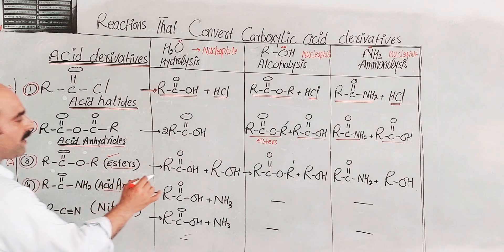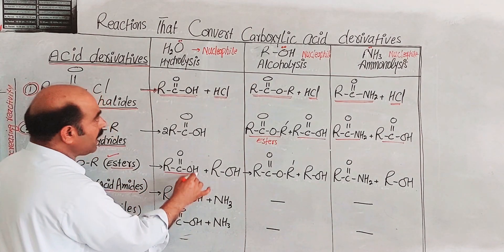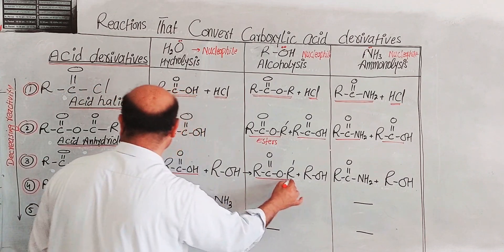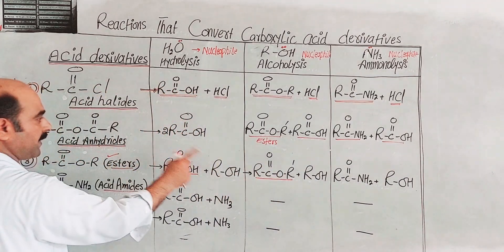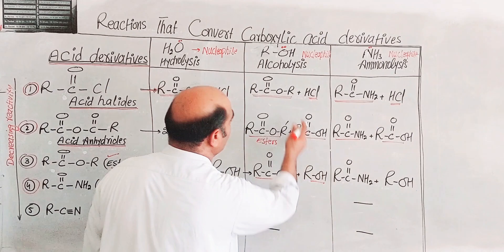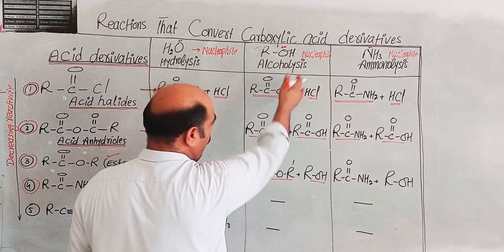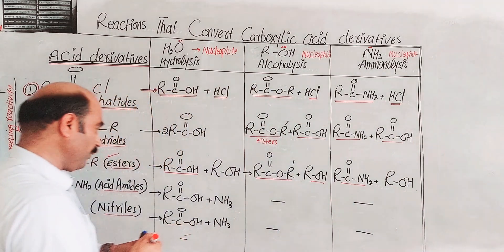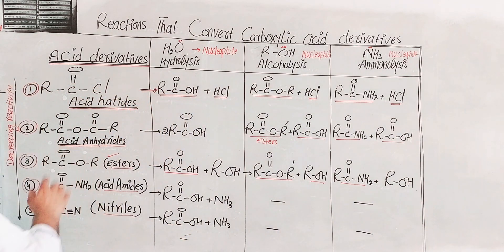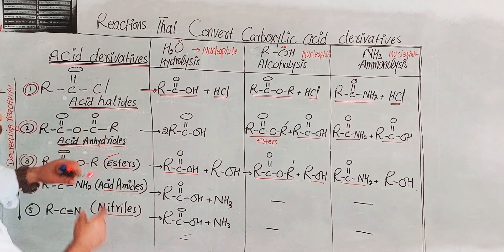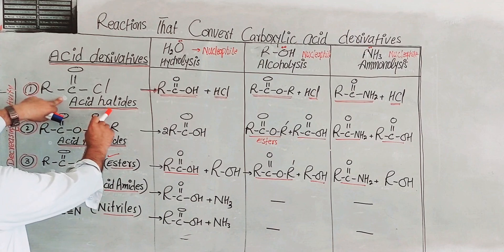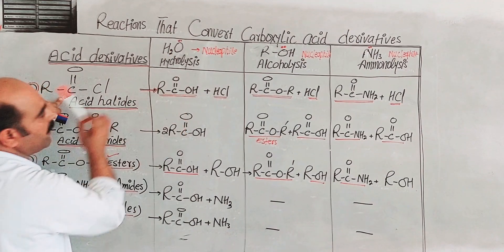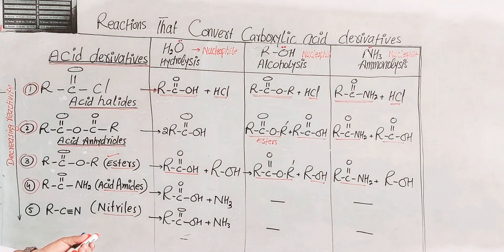Esters are converted by hydrolysis. Esters can also undergo alcoholysis. By hydrolysis, esters are converted into carboxylic acids.